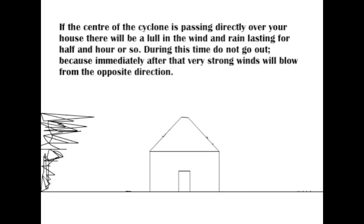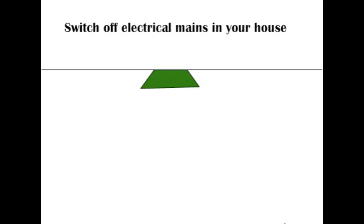If the center of a cyclone is passing directly over your house, there will be a lull in the wind and rain lasting for half an hour or so. During this time, do not go out because immediately after that very strong winds will blow from the opposite direction. Switch off electrical mains in your house.